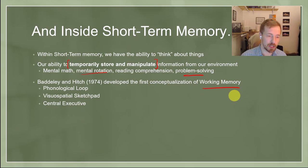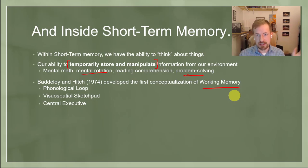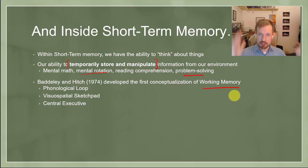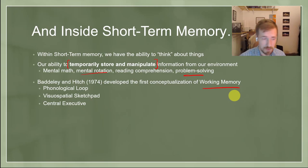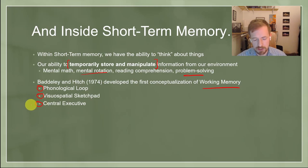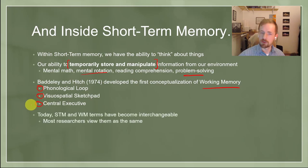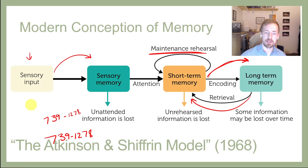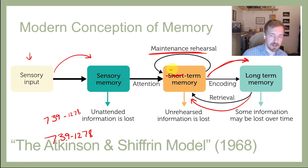The reason we refer to it as working memory is partly because it has smaller pieces inside of it. You can divide short-term memory up into smaller pieces: the phonological loop, the visual-spatial sketchpad, and the central executive. Generally, short-term memory and working memory are interchangeable terms — they mean the same thing.